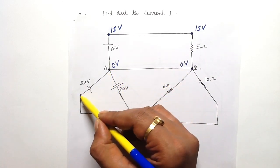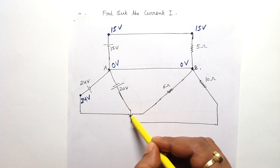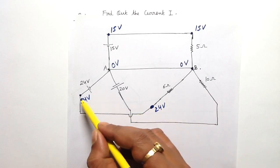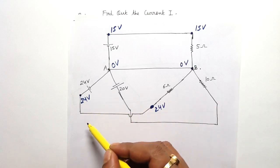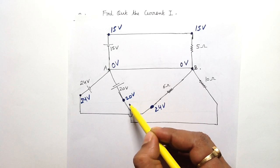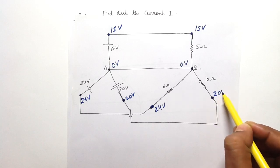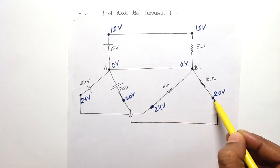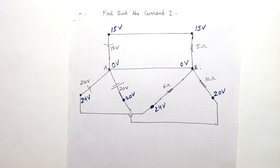This point will be at a potential of 24 volt. Moving in this direction, the potential of this point will also be 24 volt, since there is no electrical element between them. Similarly, this point will be at a potential of 20 volt, and moving this way, this connected point will also be 20 volt, as there is no electrical element in between.